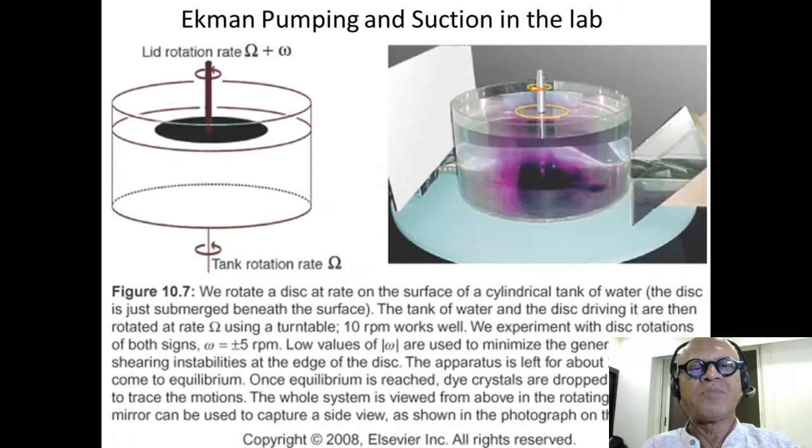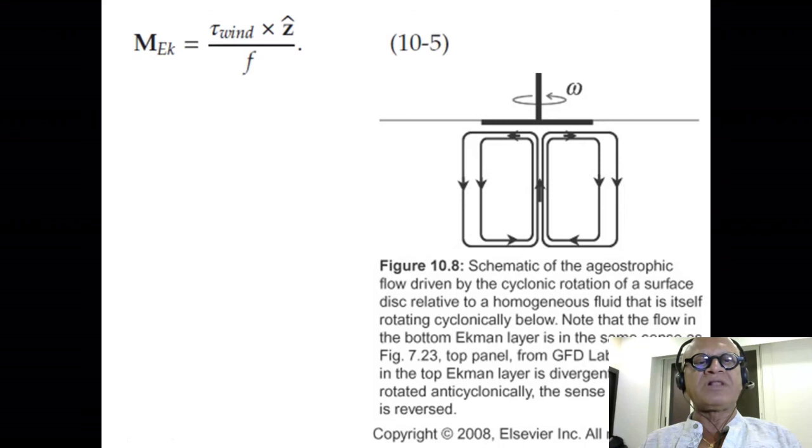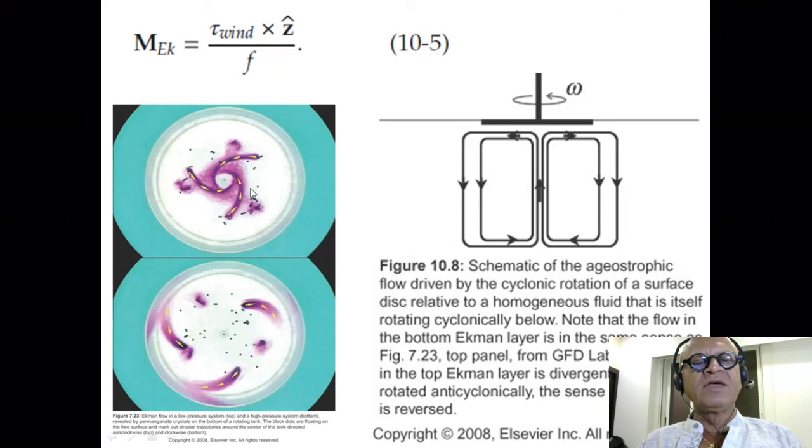In the lab, John Marshall and Alan Plumb create Ekman suction and pumping by having a disc rotating at a different speed than the tank in clockwise or counterclockwise direction, showing they can have converging and diverging flows. If you have a cyclonic circulation like the Earth, you create divergence—because it's cyclonic circulation, low pressure in the middle—so there's the Ekman transport. We've seen this before.